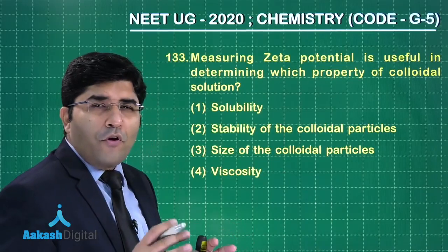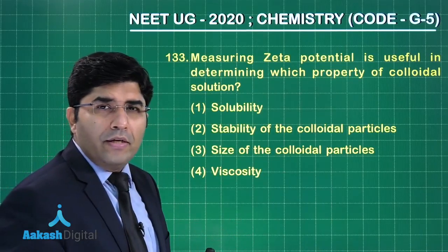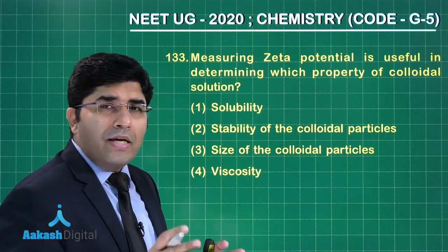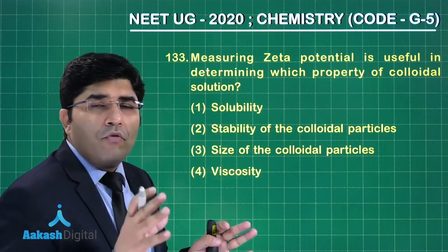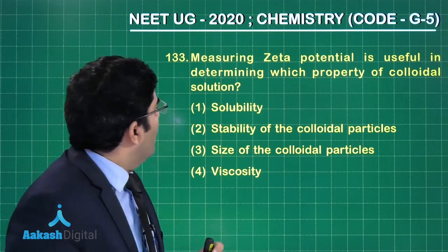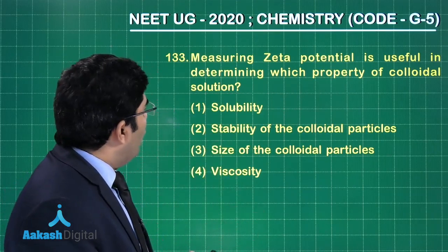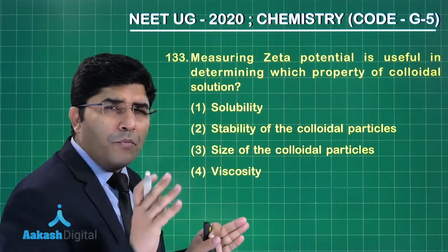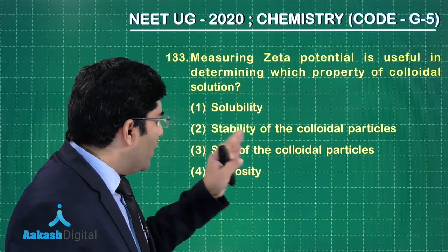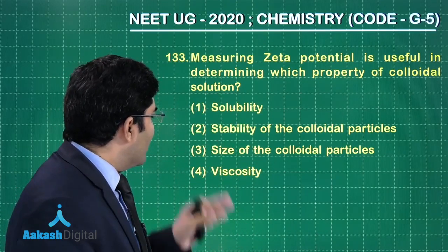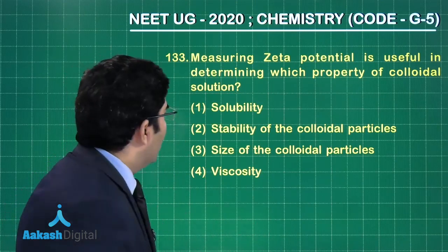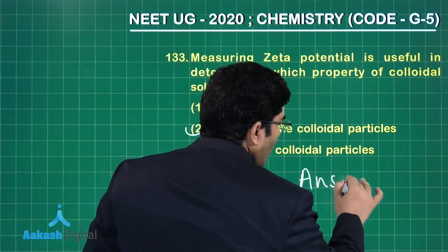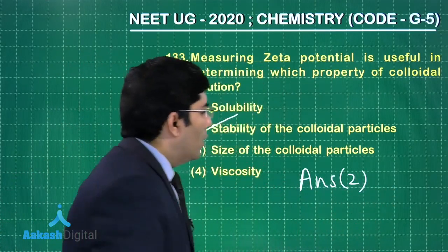This question is from surface chemistry, topic: colloids. The question asks — measuring zeta potential is useful in determining which property of colloidal solutions? Four options are given: solubility, stability of the colloidal particles, size of the colloidal particles, and viscosity. The correct answer is option number two — stability of the colloidal particles.